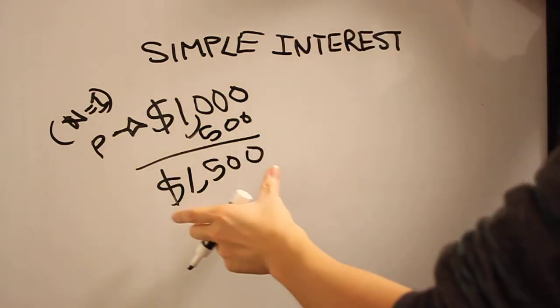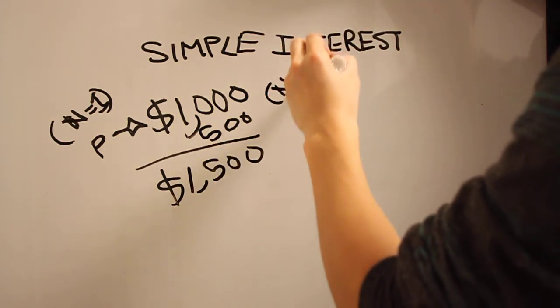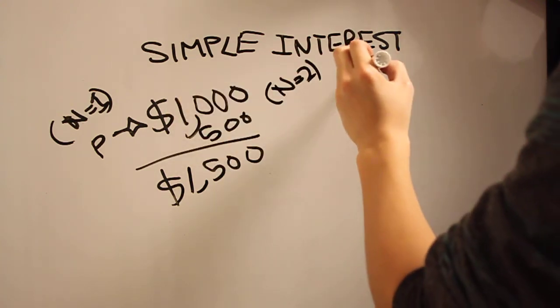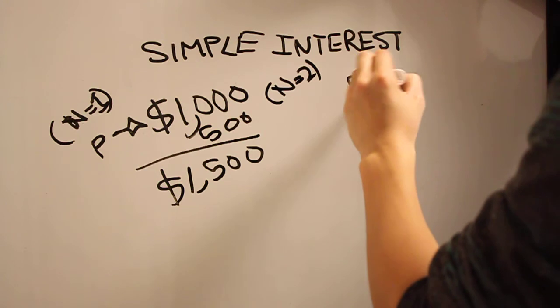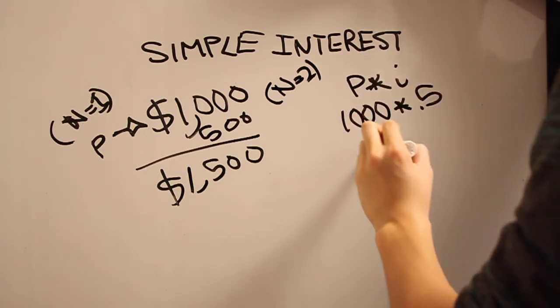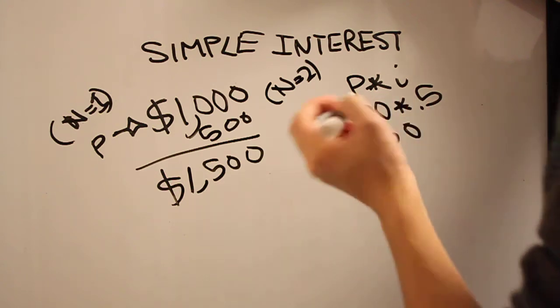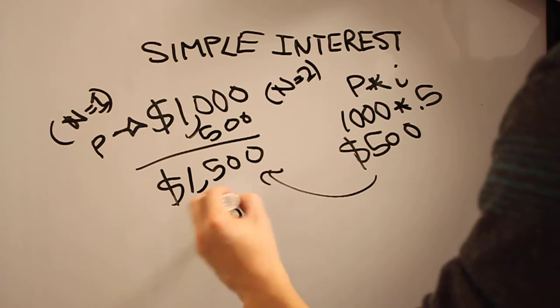Instead of using 1,500 as your starting point for n equals 2, you're going to use 1,000 again. So all you're really going to do is take P times i again, which is 1,000 times 0.5. You get another $500 at the end of round 2, and you add that here. So at the end of round 2, you have $2,000.